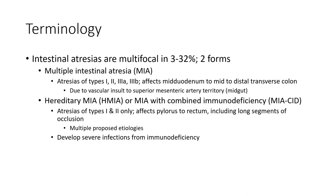Hereditary multiple intestinal atresias (HMIA), or HMIA with combined immunodeficiency (HMIA-CID). Atresias of types T1 and T2 only affect the pylorus to rectum, including long segments of fusion. HMIA-CID patients develop severe infection from immunodeficiency.